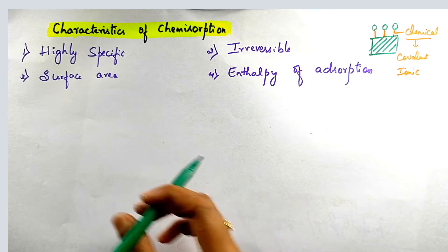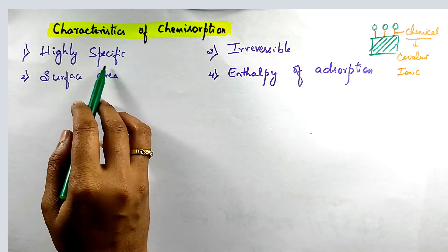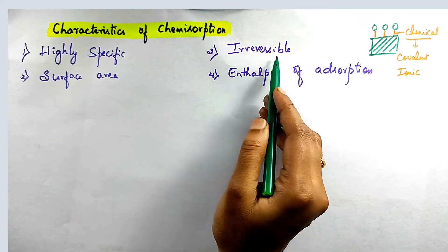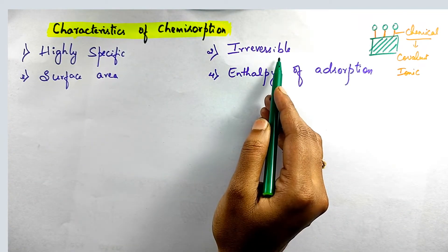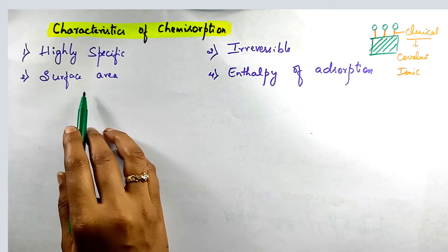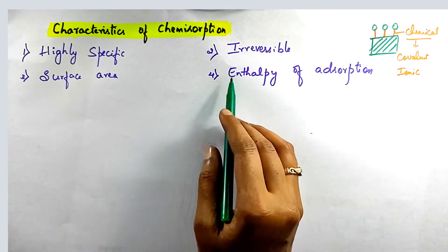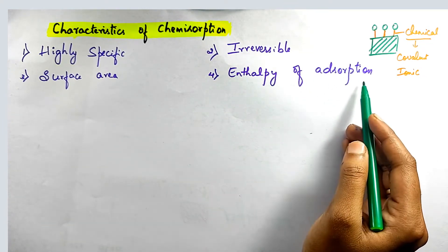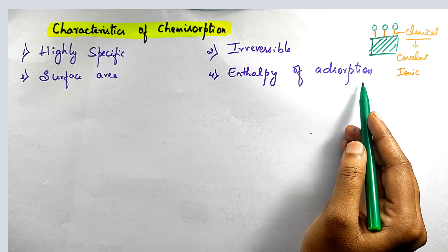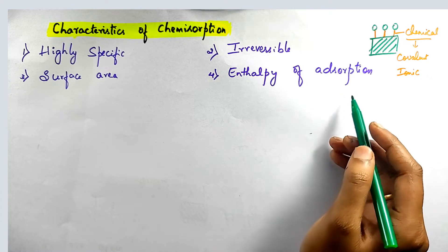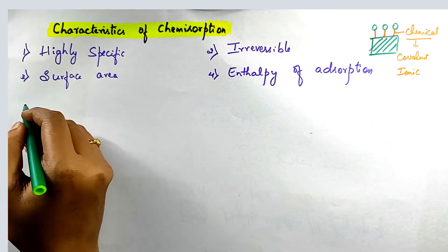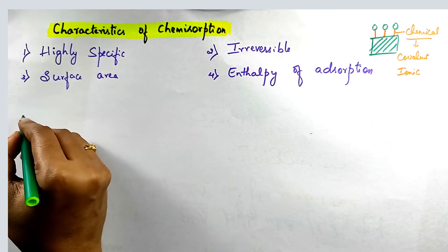There are four characteristics of chemisorption. The first one is highly specific in nature. The second one is irreversible in nature. The third one is surface area. And the last one is enthalpy of adsorption. These are the four main characteristics of chemisorption or chemical adsorption. Let us discuss them one by one.